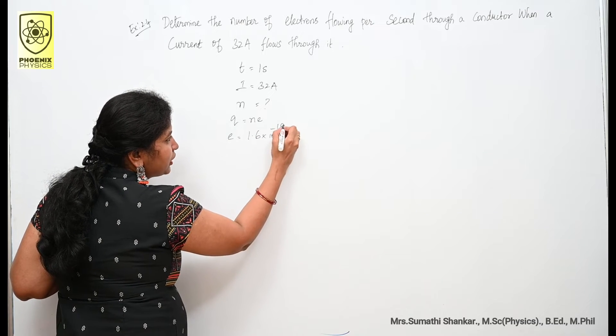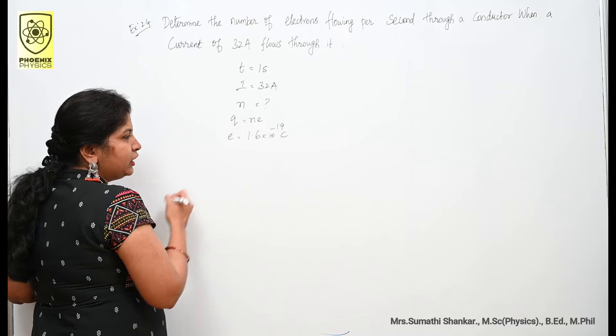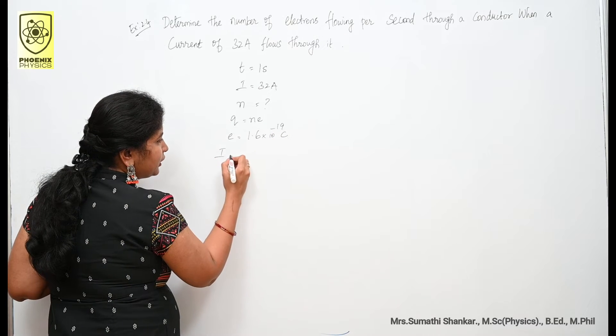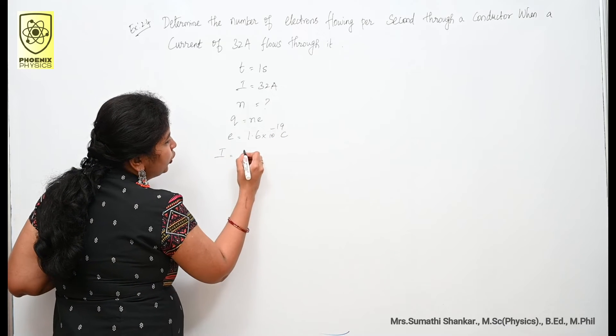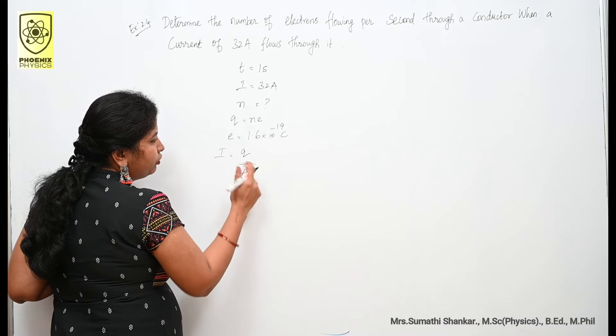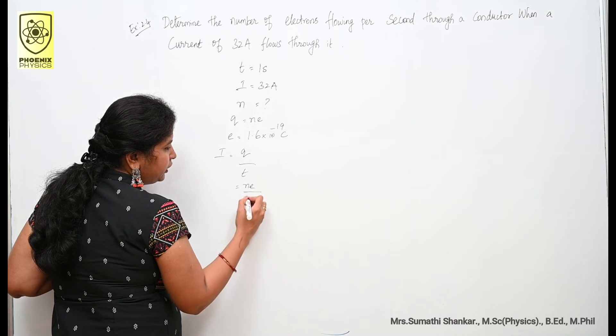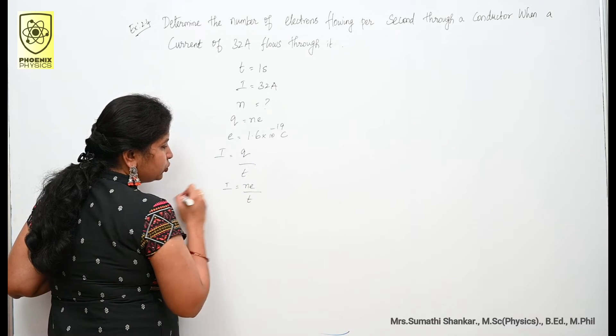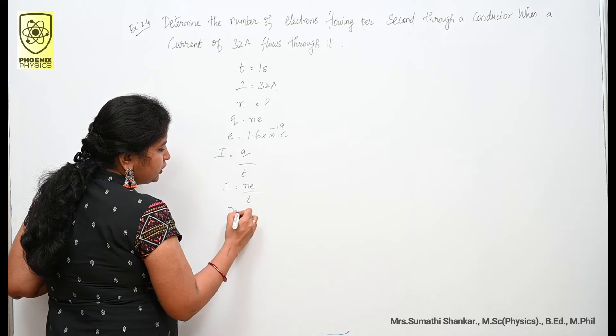The general formula for current is I is equal to Q by t. Q is equal to n into e divided by t. This is equal to I. I need n, so n is equal to I into t divided by e.